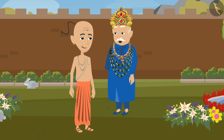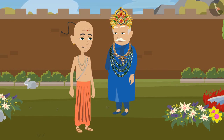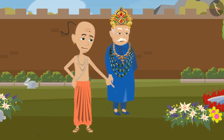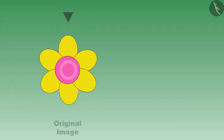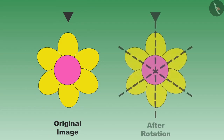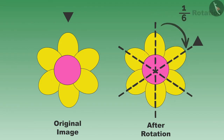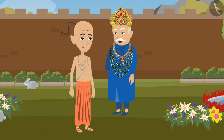Tenali Rama, you have very well described the images with one-third rotational symmetry. Now show me some images with one-sixth rotational symmetry. Is there some image around us that will remain the same even after one-sixth rotation? Sure, my lord. Sir, please have a look at this flower very carefully. This flower has six parts — whenever we make one-sixth rotation, it will remain the same as before.